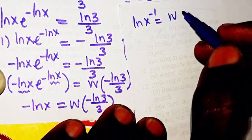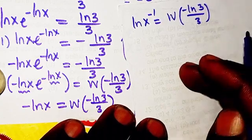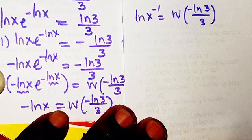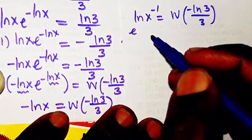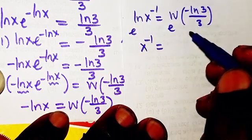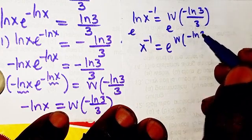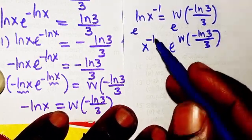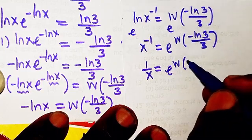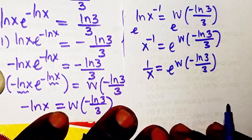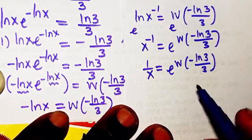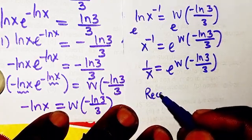So ln(x^(−1)) = W(−ln(3)/3). We exponentiate both sides, giving x^(−1) = e^(W(−ln(3)/3)). Using the law of indices, x^(−1) is 1/x, so 1/x = e^(W(−ln(3)/3)). The next step is to take the reciprocal.